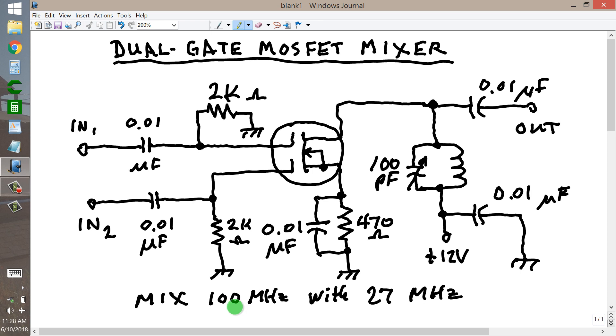those frequencies, 100 MHz, and those are the ones he specified, 100 MHz and 27 MHz, are probably too high, way too high, for using an operational amplifier as a mixer circuit. There are a lot of different kinds of mixer circuits out there.